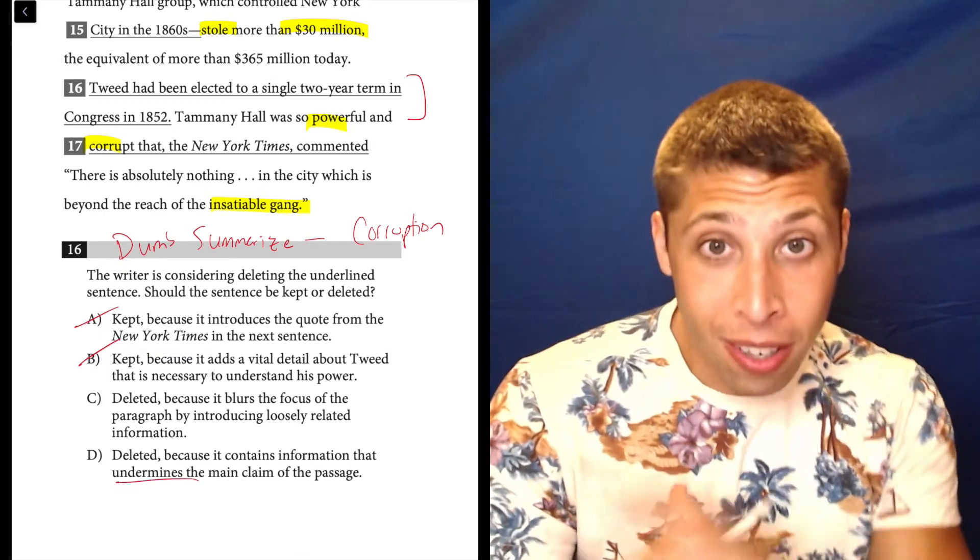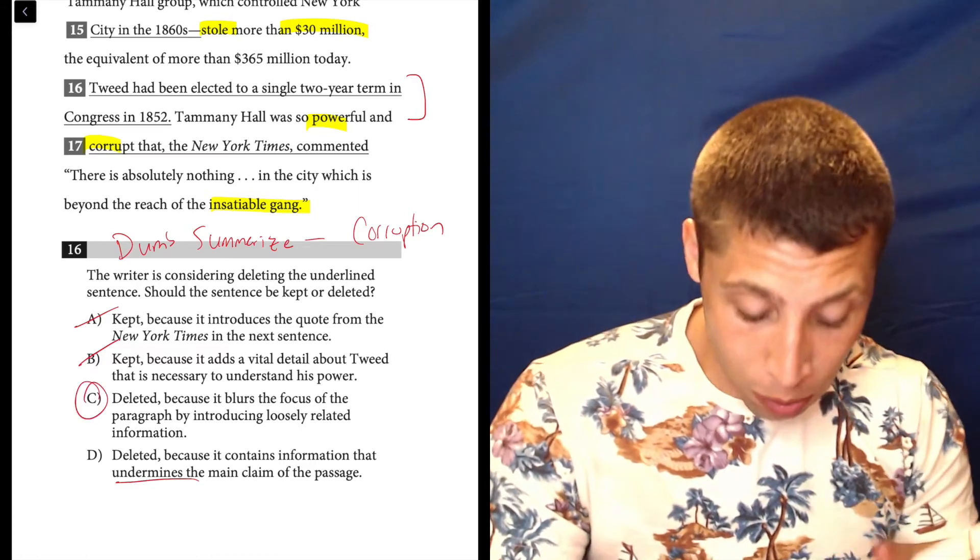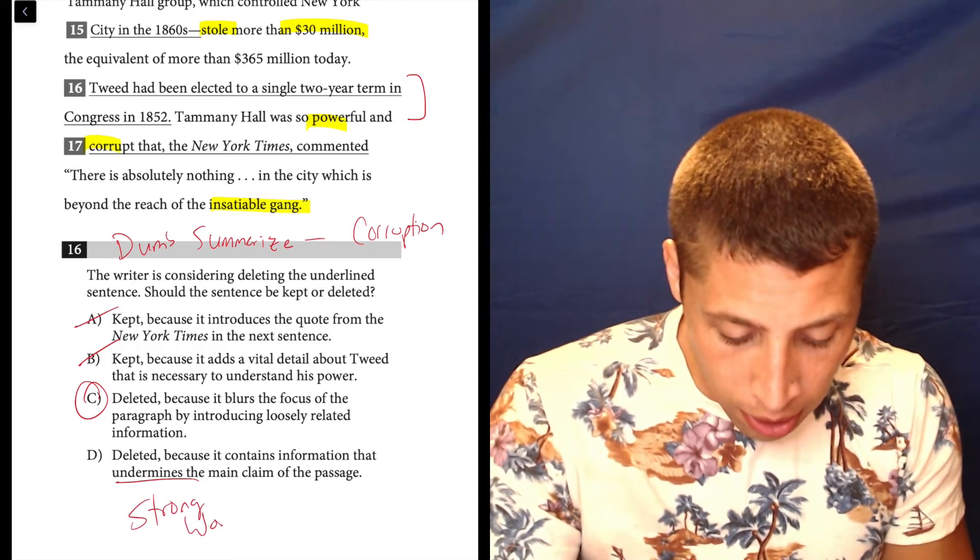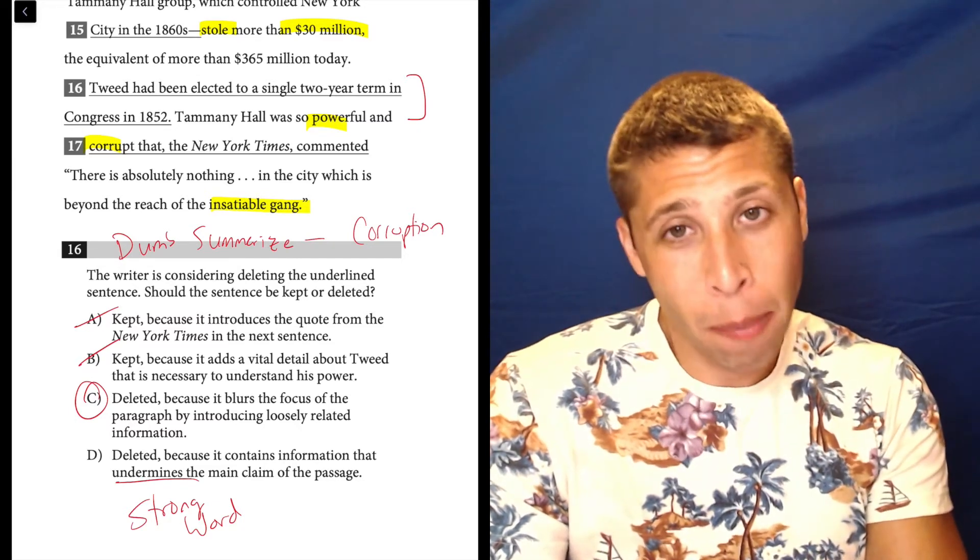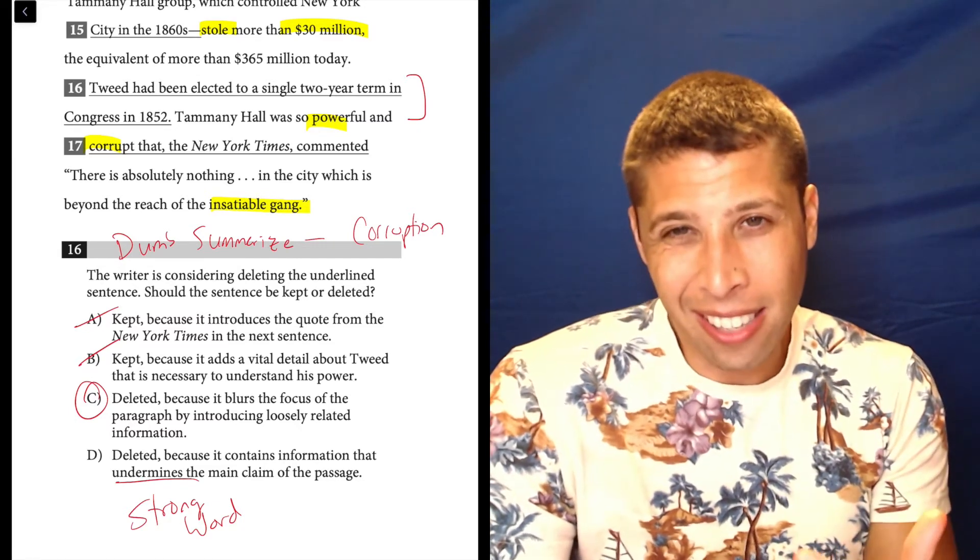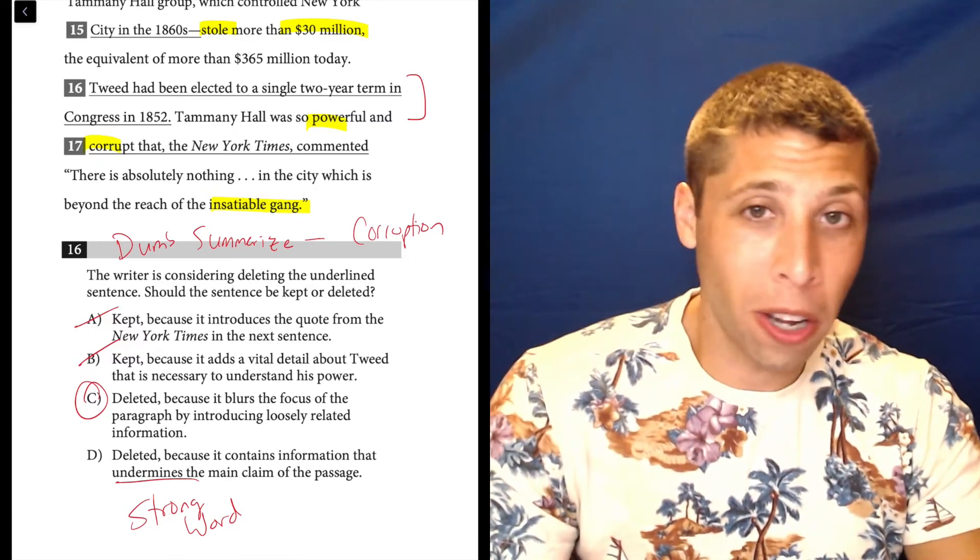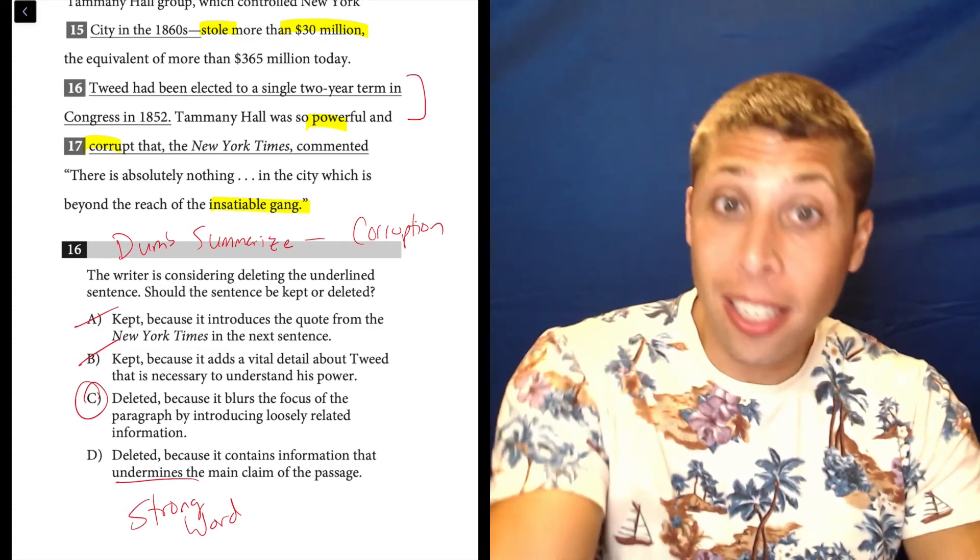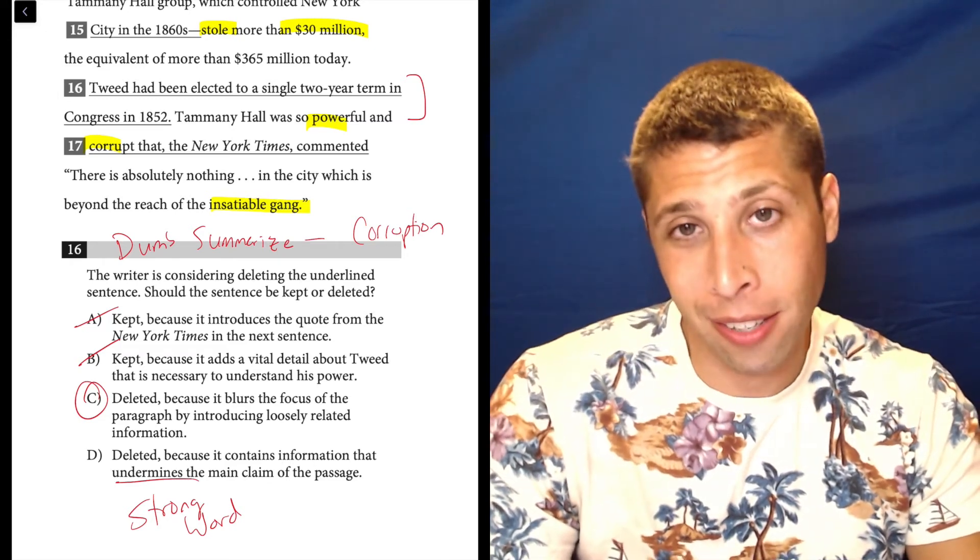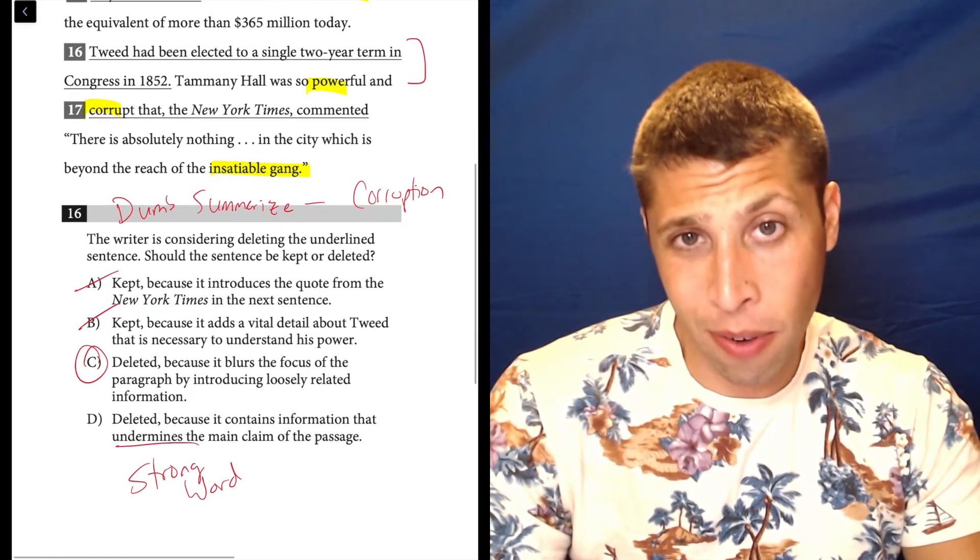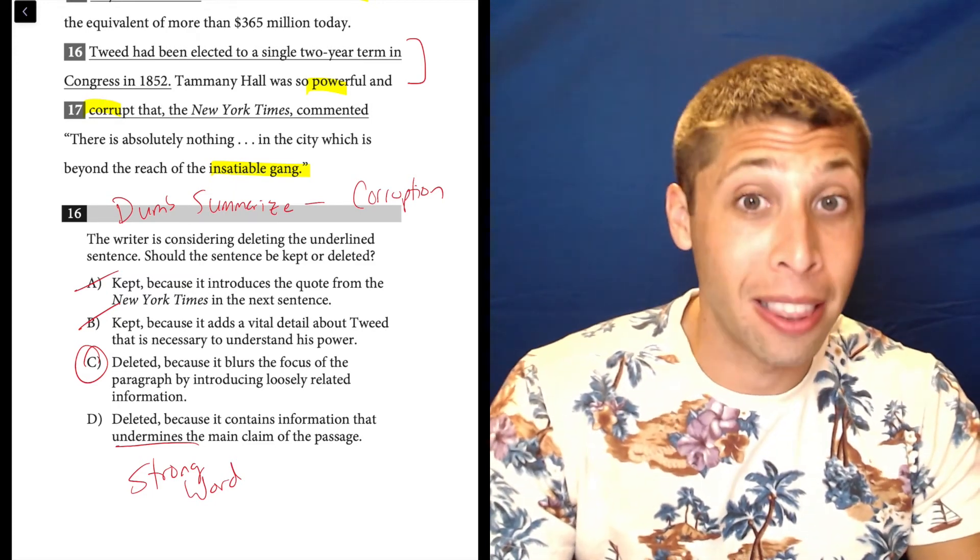We saw this exact choice between C and D in an earlier question in this test. C is going to be the answer because undermine is a strong word. This is a random fact. It gets in the way of my main point about corruption, but it doesn't undermine that point. It doesn't attack the point. And so this strong word, undermine, it doesn't contradict the main point. So this is just too strong. Go with things that are weaker, just like we do on the reading section, and it's very likely you'll have this exact kind of choice yourself on your own SAT. They tend to repeat these kinds of choices.